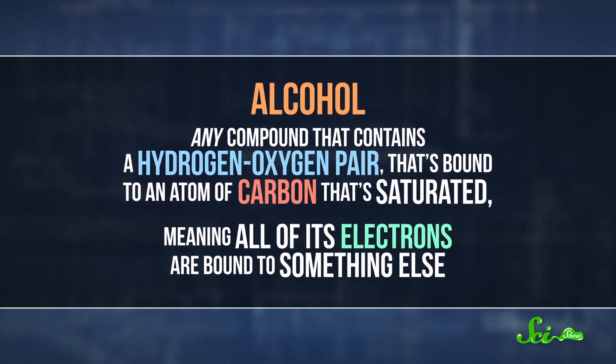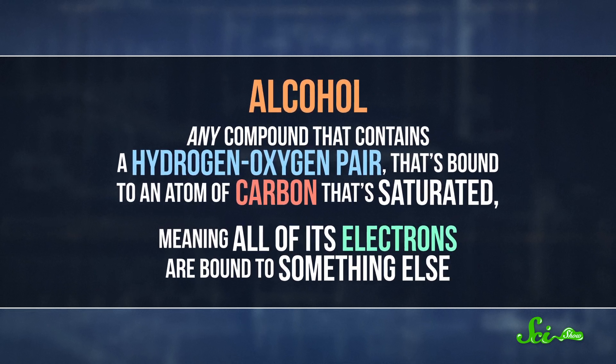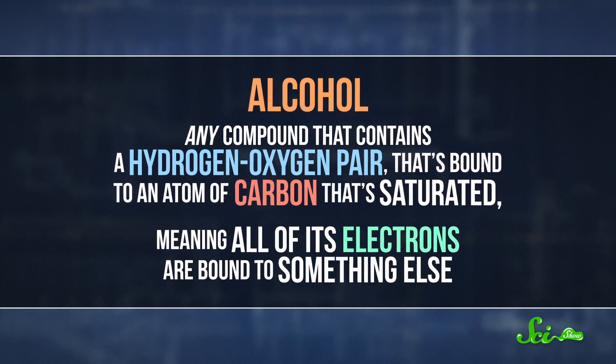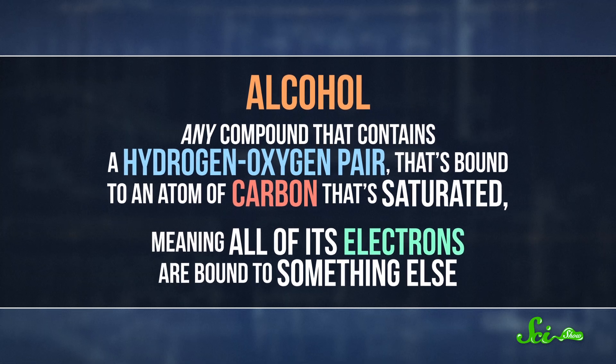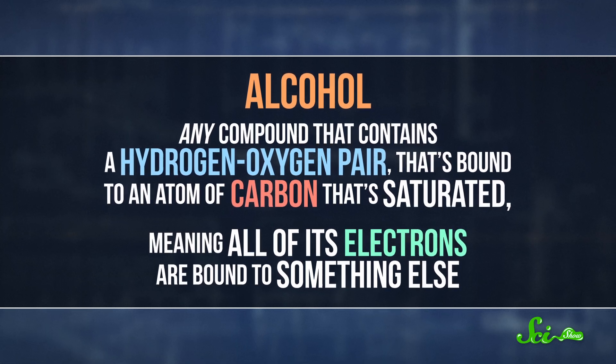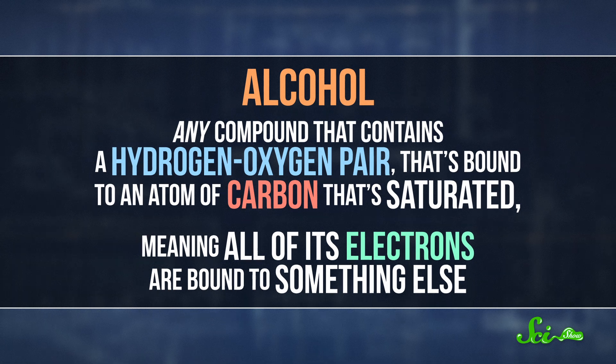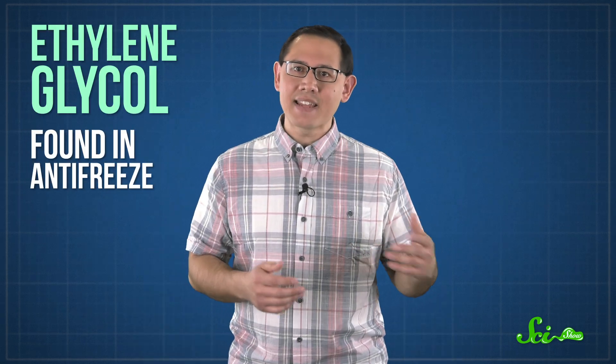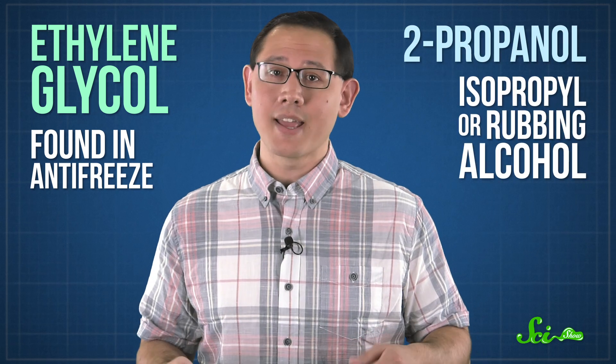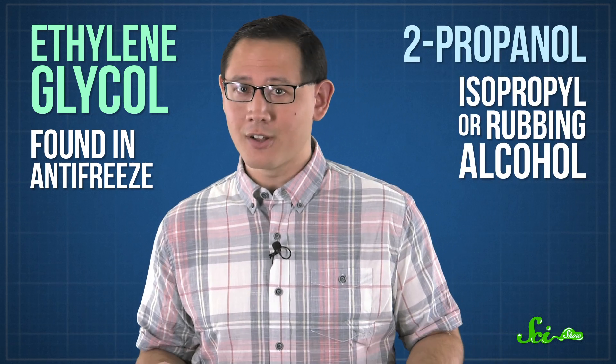Technically speaking, an alcohol is any compound that contains a hydrogen-oxygen pair, known as a hydroxyl group, that's bound to an atom of carbon that's saturated, meaning all of its electrons are bound to something else. That describes all kinds of chemical compounds, most of which you'd never want to put in your body—like ethylene glycol, the stuff that's in antifreeze. That's an alcohol. And so is 2-propanol, aka isopropyl, or rubbing alcohol.